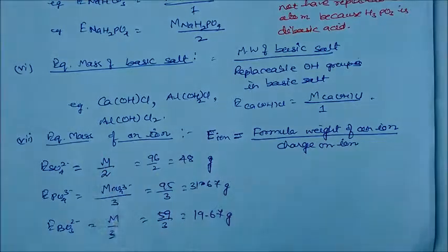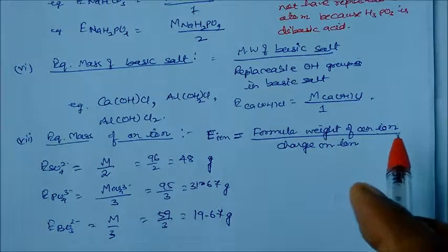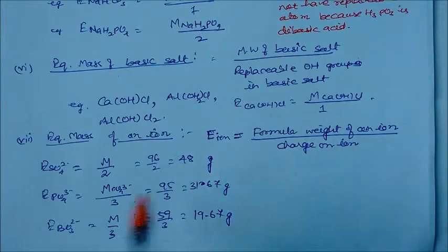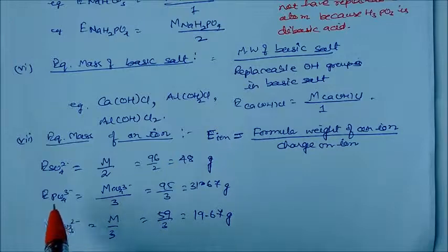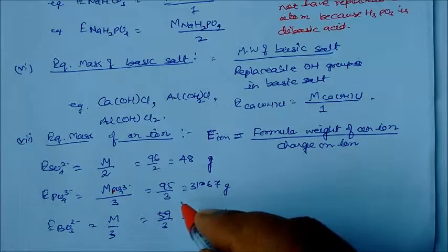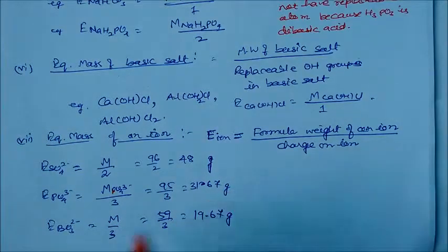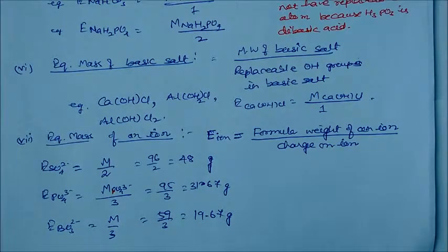For equivalent mass of an ion: equivalent mass = formula weight of ion divided by charge on ion. For sulfate ion (SO4²⁻): 96/2 = 48 grams. For phosphate ion (PO4³⁻): 95/3 = 31.67 grams. For borate ion (BO3³⁻): molecular mass 59/3 = 19.67 grams. These are the equivalent masses of ions. All the above examples cover non-redox reactions. Now we will see what the equivalent mass will be when substances participate in redox reactions.